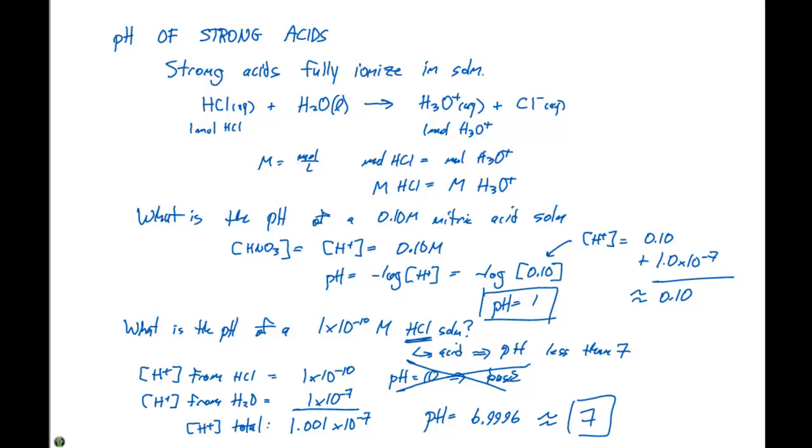Because we do have an acidic solution, it's gonna produce H⁺ ions. But we also have to consider the auto-ionization of water, which will give us a minimum H⁺ concentration of 1.0×10⁻⁷ when we're dealing with acidic solutions.